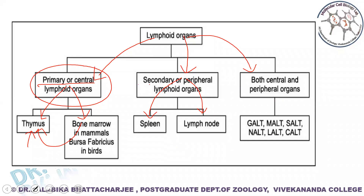When we are talking about the secondary or peripheral lymphoid organs, these are the sites where the lymphocytes encounter antigen, become activated, and undergo clonal expansion and differentiation into effector cells. It is in these sites — the spleen and the lymph nodes — that the lymphocytes of the adaptive immunity, the T lymphocytes and the B lymphocytes, encounter the antigen and are thereby activated.